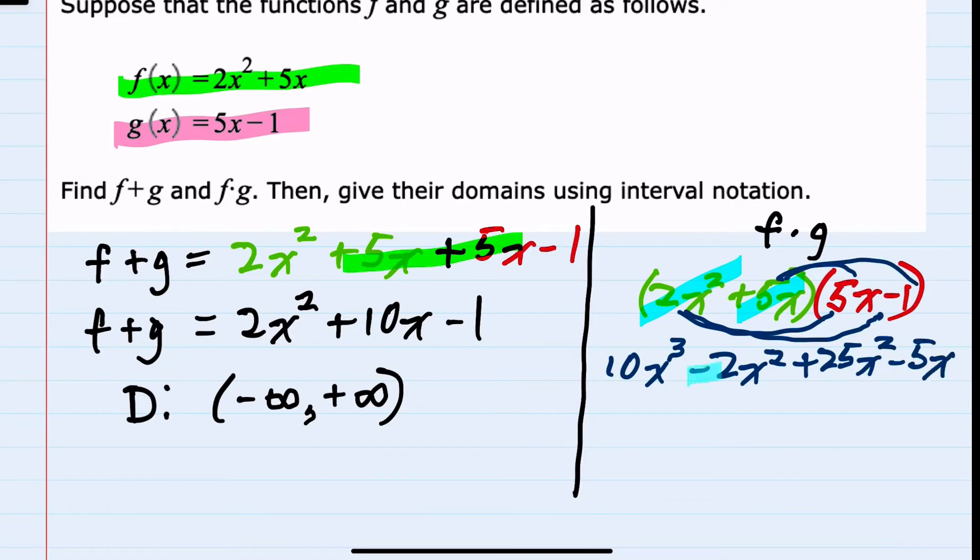From here, I can see that these middle terms are like terms and can also be added. So just bringing down the 10x cubed, the minus 2x squared plus 25x squared would be plus 23x squared.